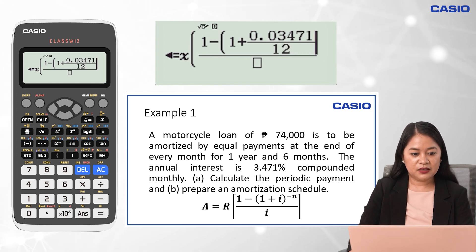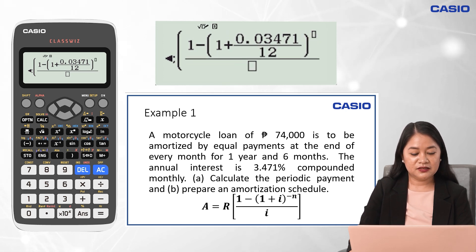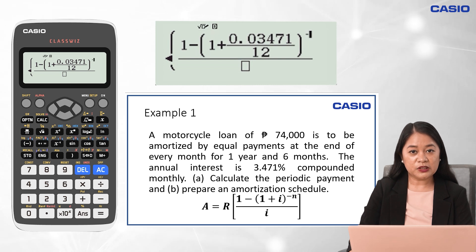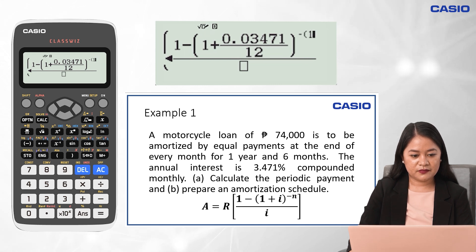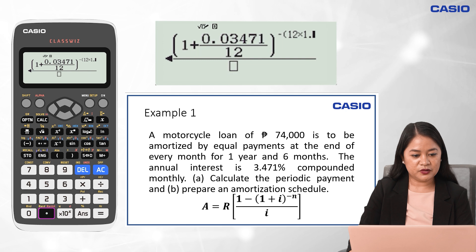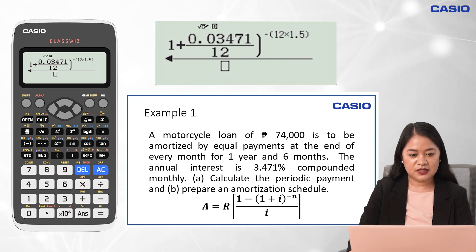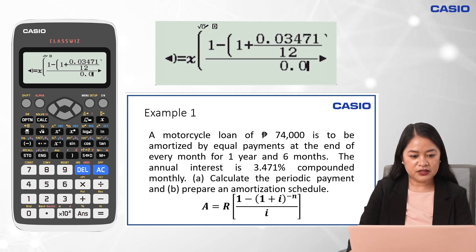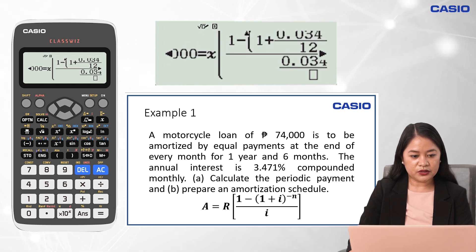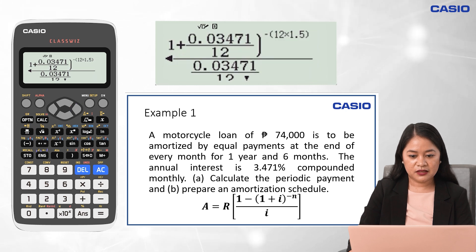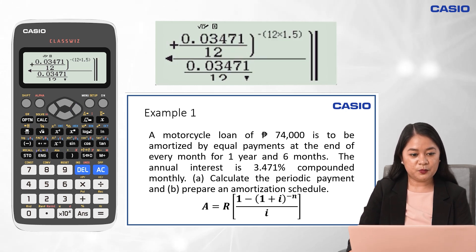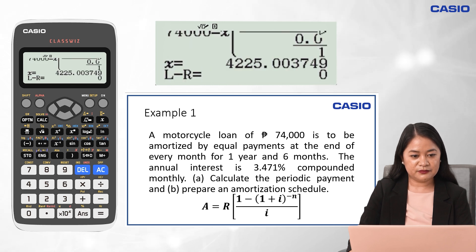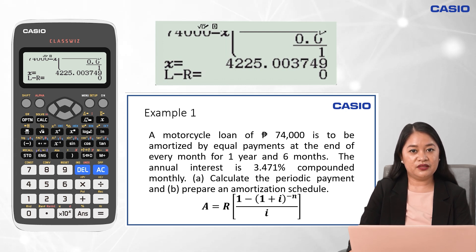Press the right arrow key, close parentheses, then the exponent key, then negative n — where n is 12 multiplied by 1.5 years. Close parentheses, then press the right arrow key again. For the periodic rate, input 0.03471 over 12. Press the right arrow key again, then close parentheses. Once done, press Shift, Cal, and equal sign. The periodic payment is 4,225 pesos.